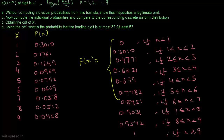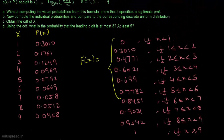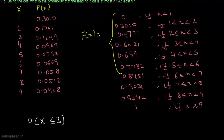In part D, we have to use this CDF to find the probability that the leading digit is at most 3. That means we have to find P(X ≤ 3), which equals F(3). We already found F(3) = 0.6021, so the answer is 0.6021.